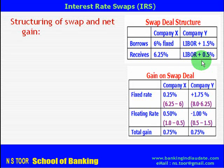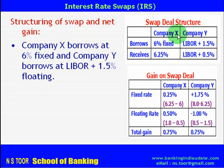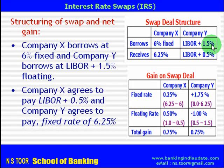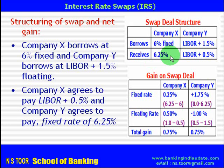Now, how will this swap deal be structured? Company X borrows at 6% and Company Y borrows at LIBOR plus 1.5%, so those loans are available to them from their respective lenders. Company X agrees to receive 6.25% from Company Y, and Company Y agrees to receive LIBOR plus 0.5% from Company X. That is the structure of the swap deal.